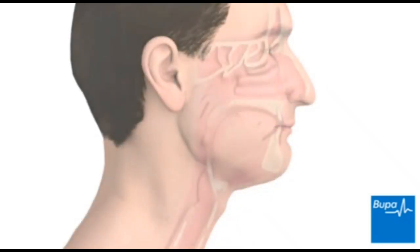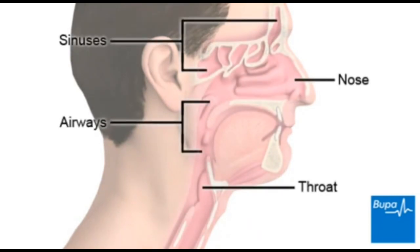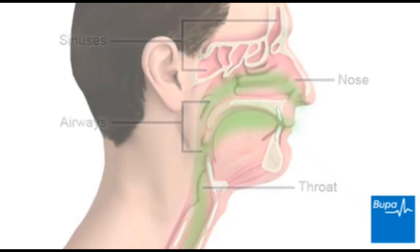Cold viruses grow in soft, warm surfaces, such as your nose, throat, sinuses or airways.